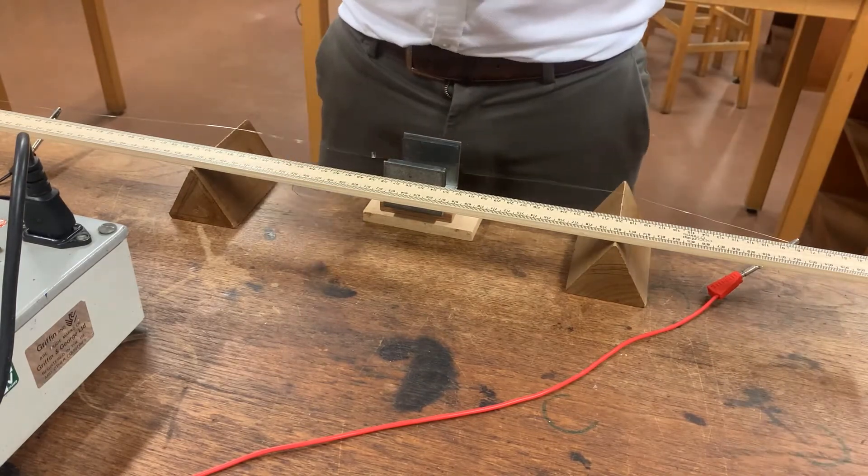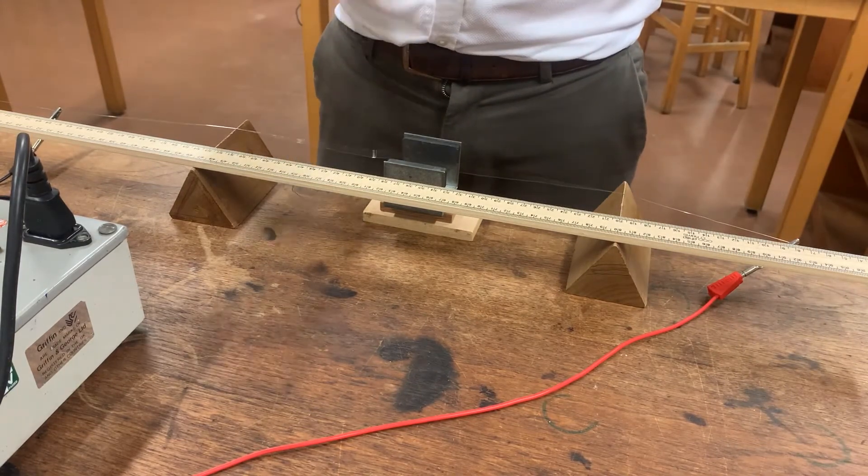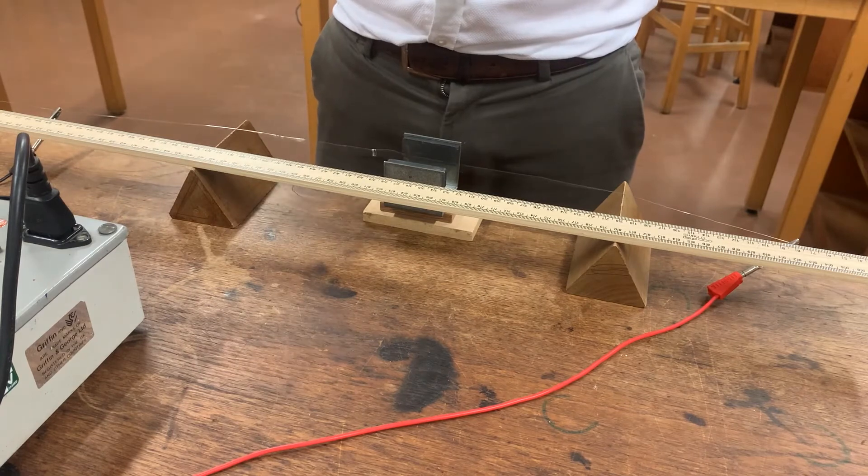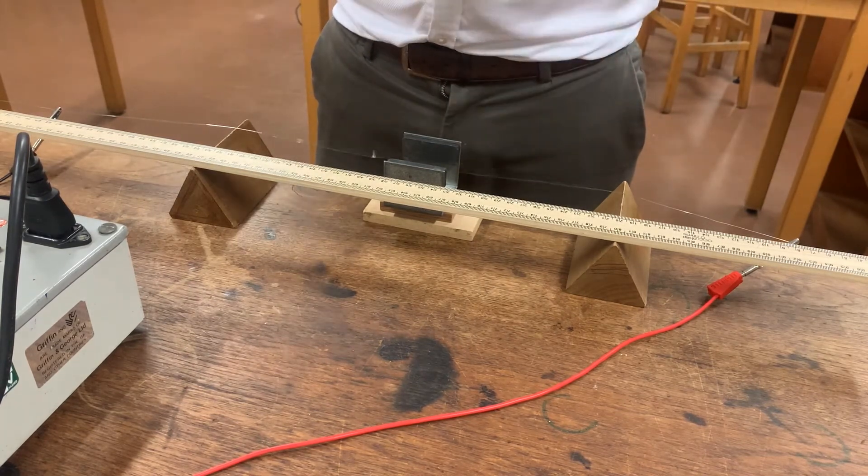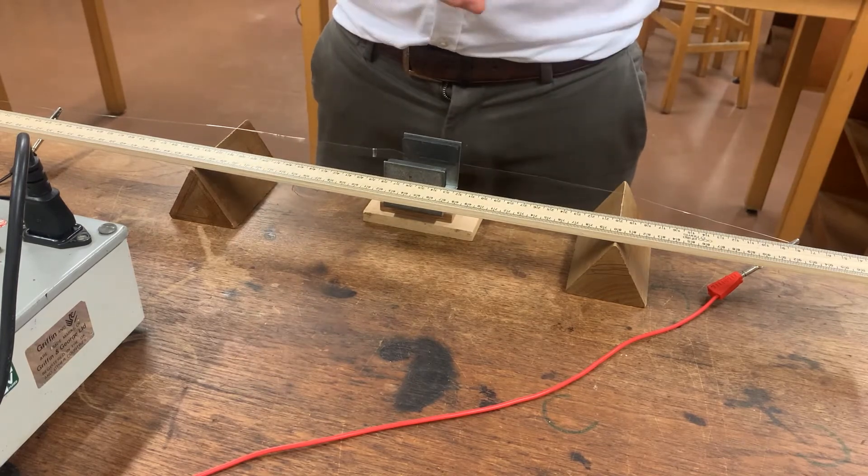Now what I'm going to do is go up in steps of 50 grams and what I'll do is for some of the values of mass I will take photographs of either end of the ruler so you can take your own measurements.